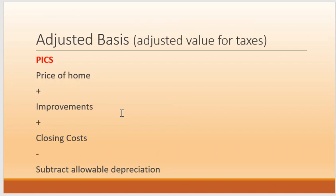The other acronym we're going to use today is for adjusted basis. This is the adjusted value for taxes. The acronym for this is PICS. So if you see the words 'adjusted basis' in a question on your test, write down PICS. It's the price of home plus improvements plus closing costs, then subtract allowable depreciation.